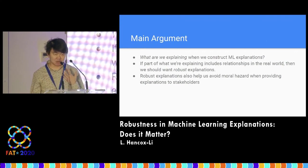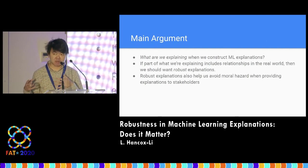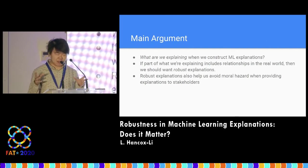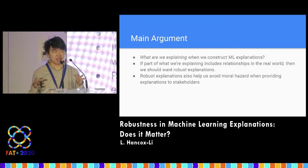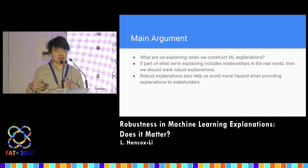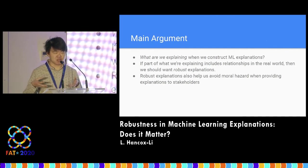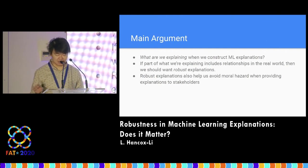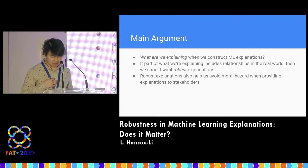By robustness, I mean something roughly like multiple methods converging on the same explanation. To clarify, robustness in this sense is not the same as getting robust outputs or predictions — I'm talking about the robustness of the explanation itself. For example, you want robust feature importance rankings: multiple methods converging on the same rankings. In some literature, this notion of robustness is called stability — I'm just using an alternate term for it.